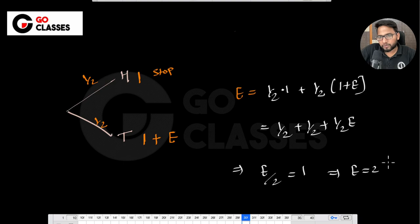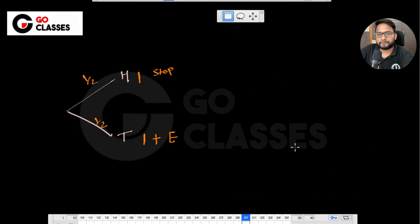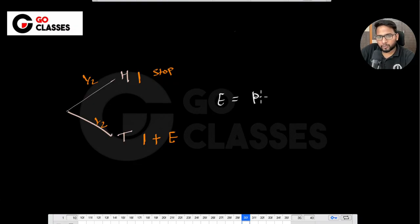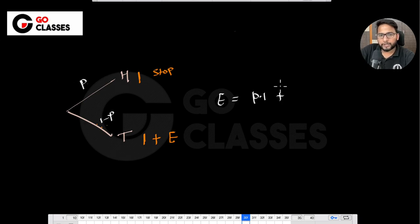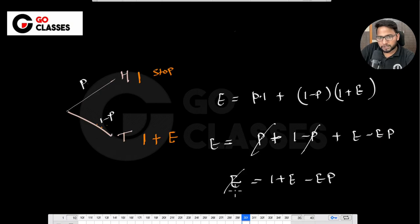Expanding: E = p + (1-p) + (1-p)·E, which gives E = 1 + E - E·p. Rearranging: E·p = 1, so E equals 1 upon p. The expected number of tries to get a head is 1/p.